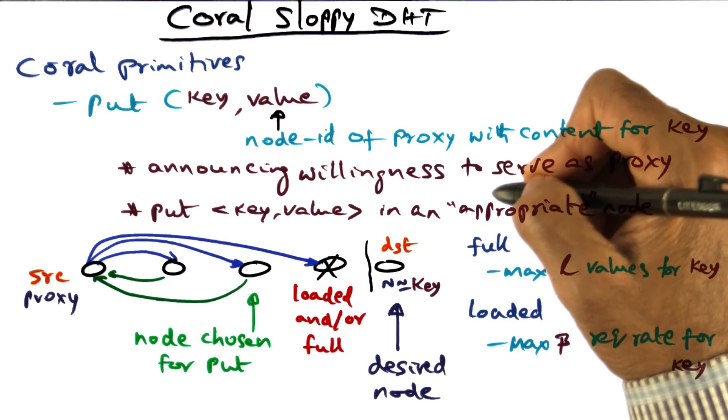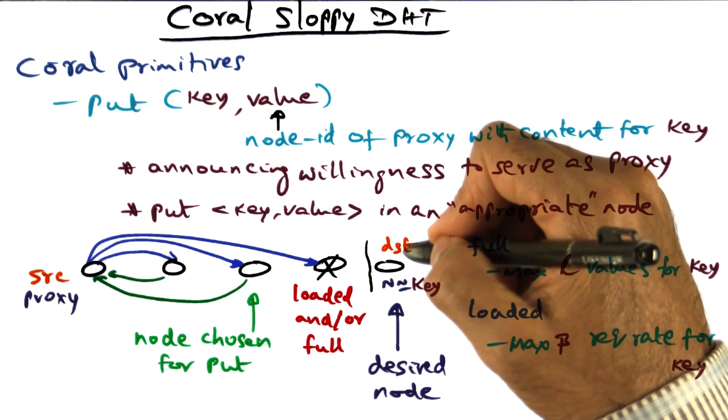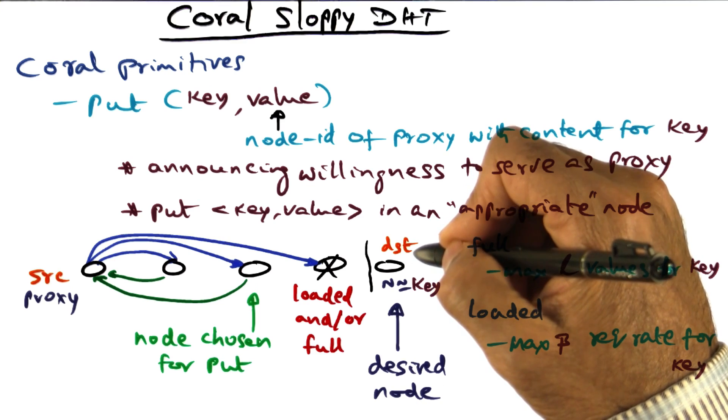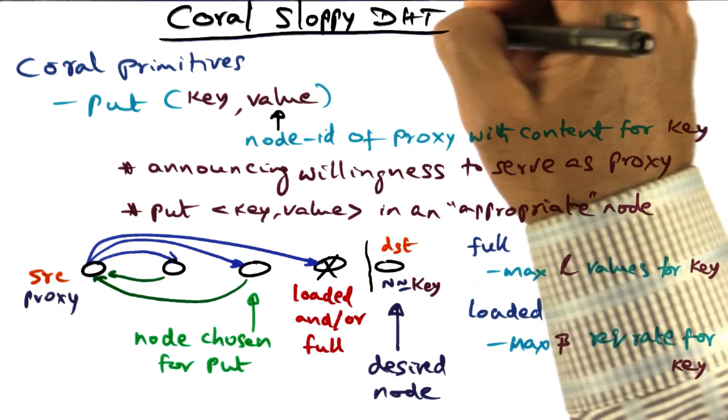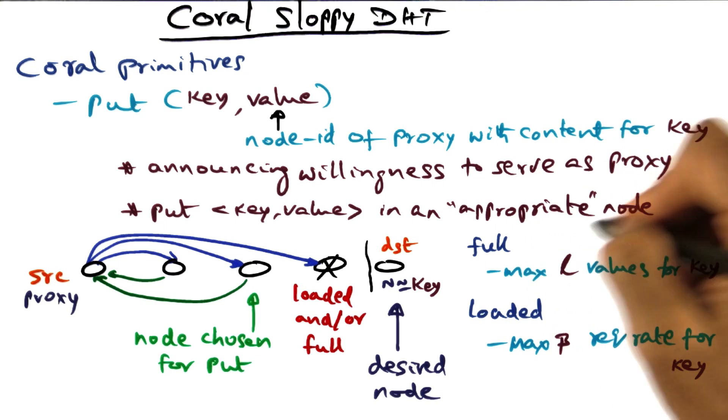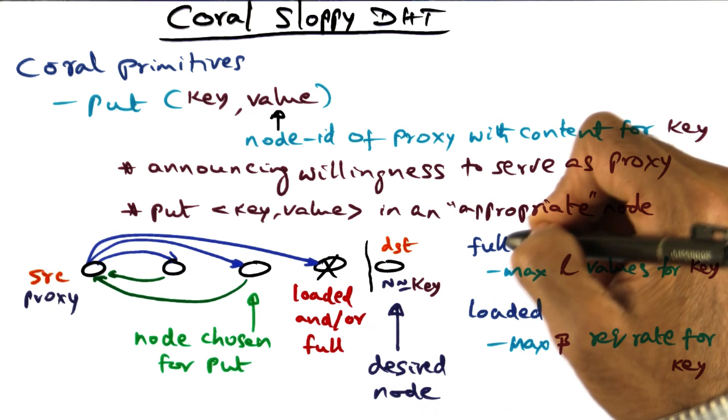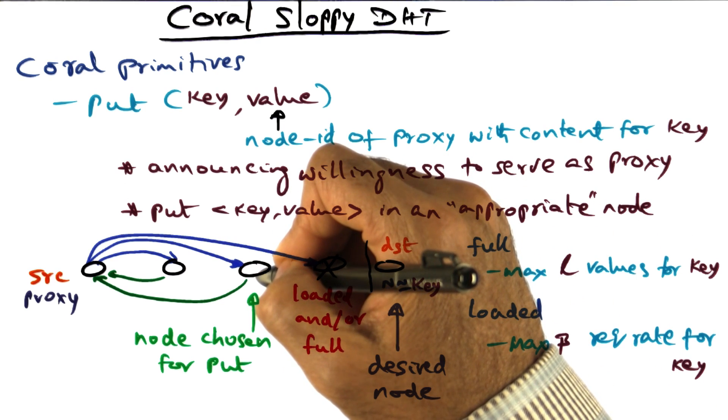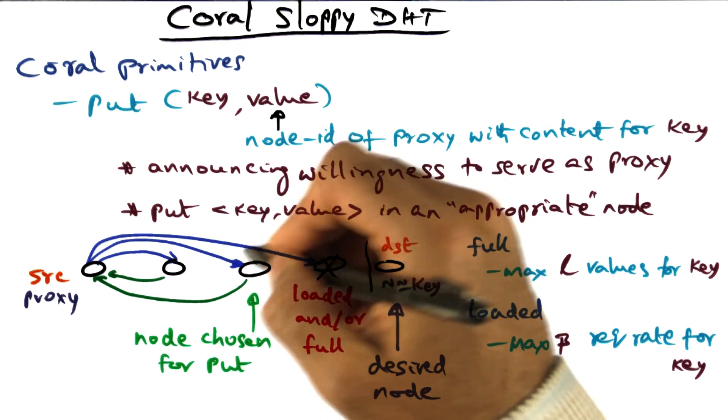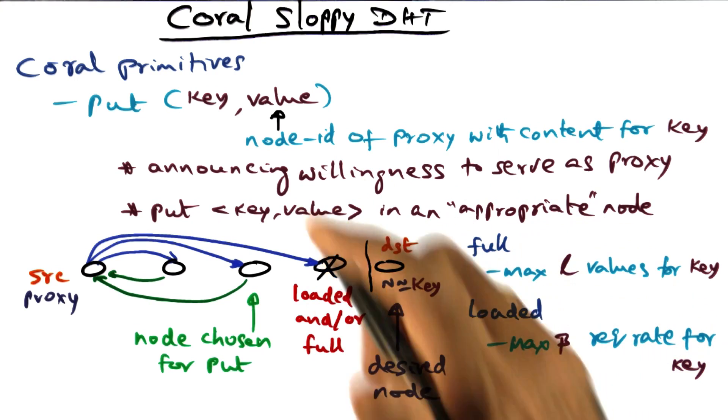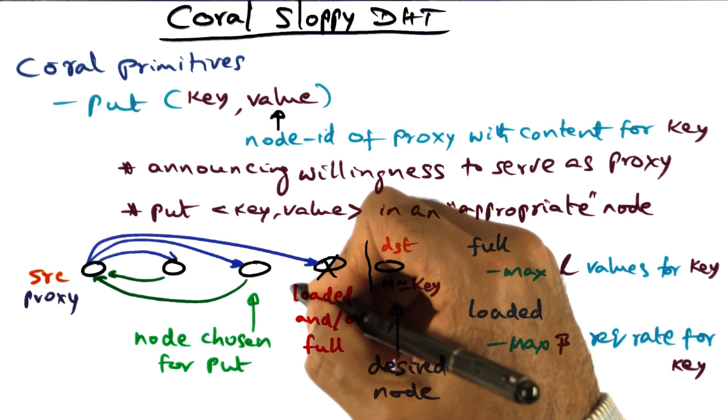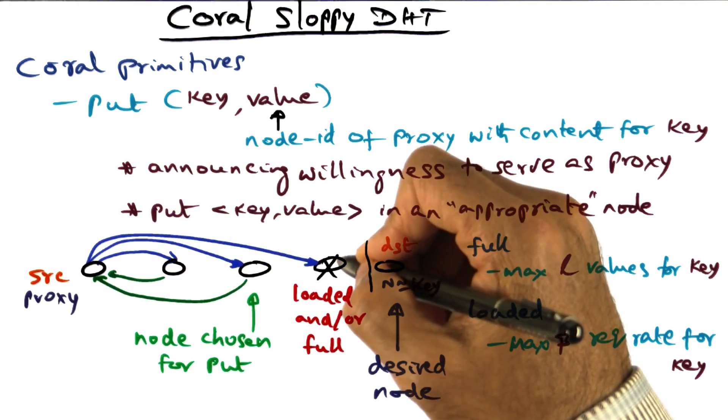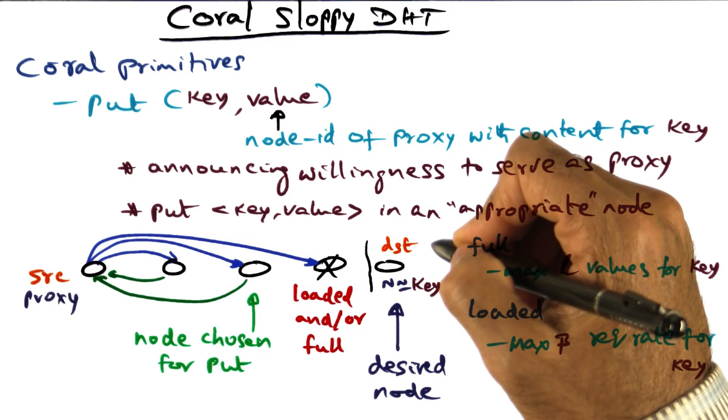So you can see that we are not storing the key in the desired destination, which should have been the way a greedy algorithm would have worked. But in the sloppy algorithm of Coral, we choose an appropriate node that is neither full nor loaded so that it can entertain requests for retrieving this particular key-value pair. So we've avoided the meta server overload by doing this key-based routing in the forward path during the put operation.